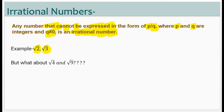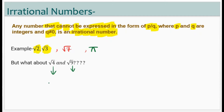Similarly, root 7 and pi are also irrational numbers. Now your question can be: what about root 4 and root 9 — are they irrational? No, they are not irrational. If you can solve them further — root 4, considering positive, has value 2, and root 9 has value 3. So on simplifying, we can get a rational number. Root 4 is a rational number, not an irrational number.